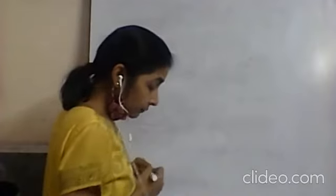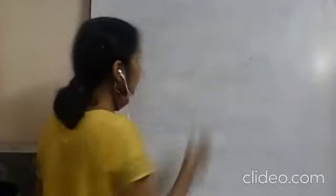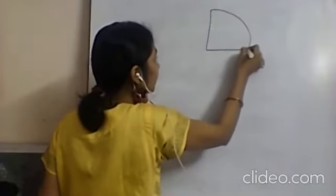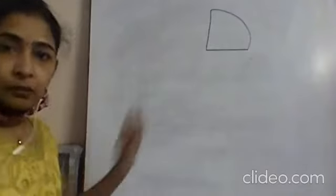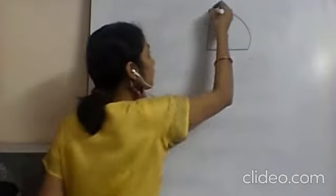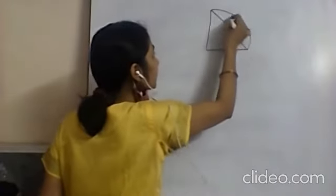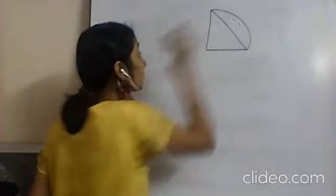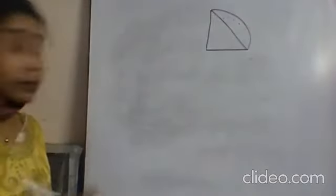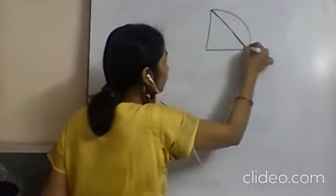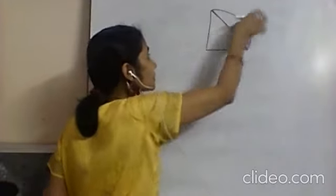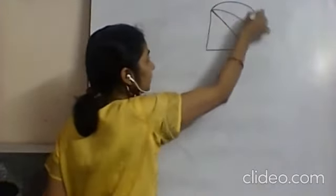In the given figure, ABMC is a quadrant of a circle — one fourth of a circle. We have a portion that is the center of the circle, and this is a semicircle. We need to find the area of the shaded region.